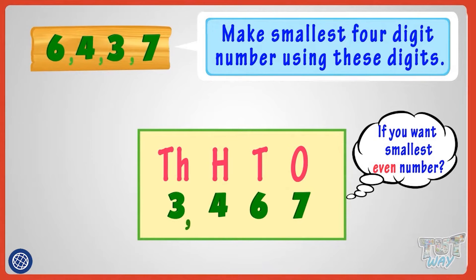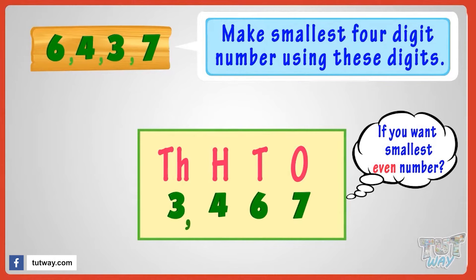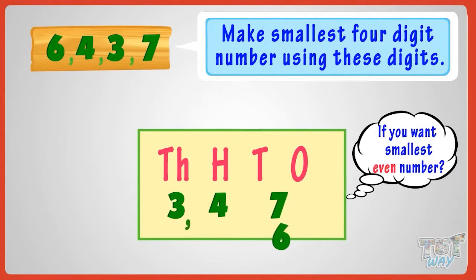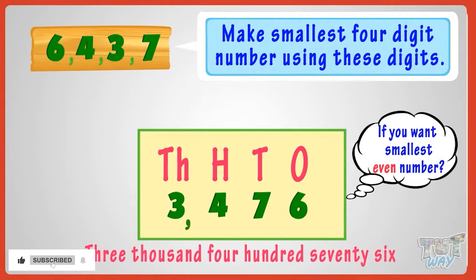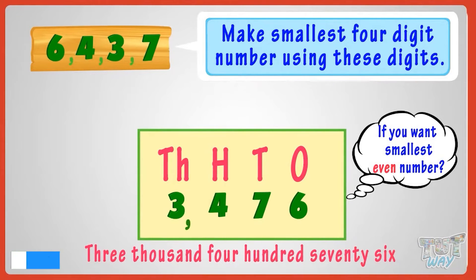Now, if we want the smallest even number, what will you do? Place the biggest even number at the end. The biggest even number in the given digits is 6, so place 6 at the end. Arrange the rest of the numbers in increasing order. So 3,476 is the smallest even number that we can make using the given numerals.